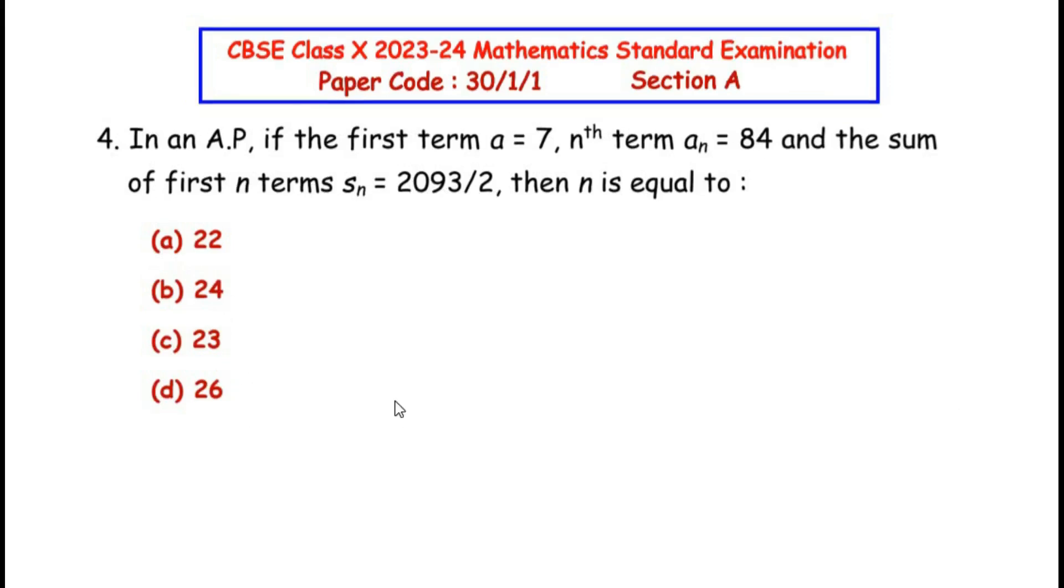Let us begin by analyzing the given data. It is mentioned that the first term is 7, and the nth term is 84, and there are total of n terms in the given series or sequence. The sum of all the n terms is also given. These are total n terms - they can be 10 terms, 100 terms, or 200 terms, we do not know. Here we have marked 1, 2, 3, 4 till n terms.